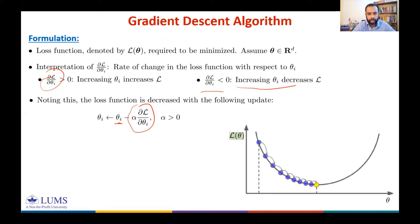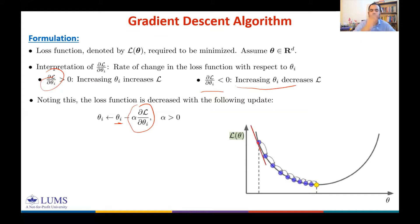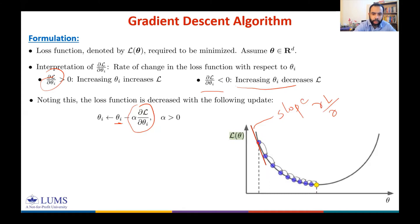Starting from some initial θᵢ, the derivative of the loss function at that point is given by the tangent. The slope of this tangent line is ∂L/∂θ. At a point on the left side of the minimum, the slope is negative.